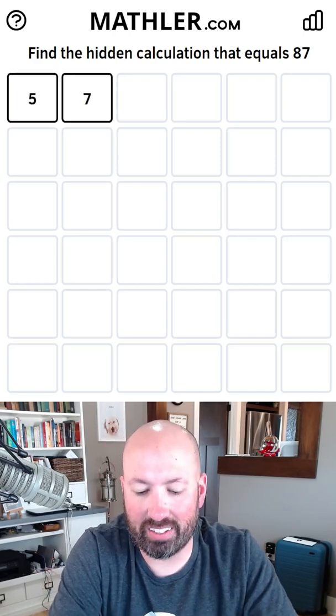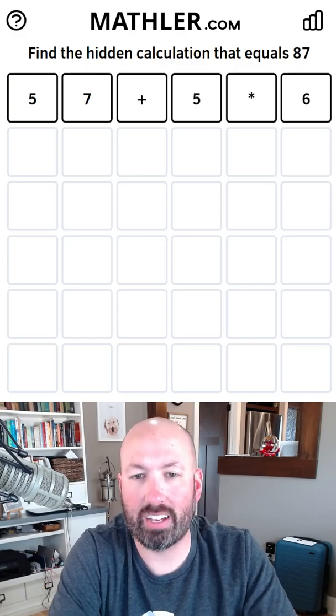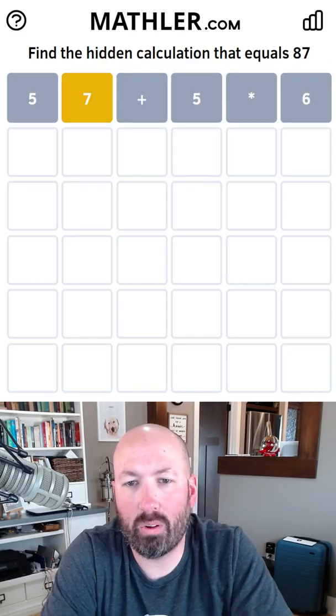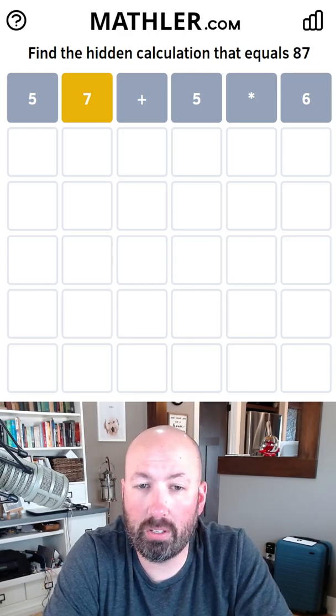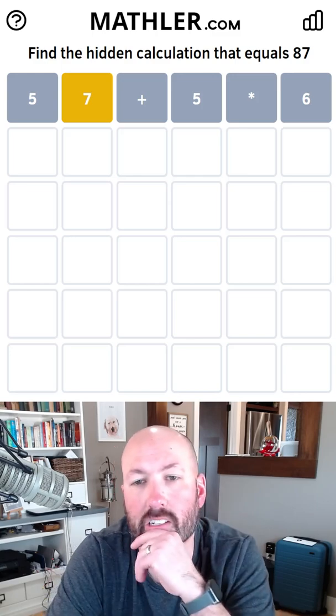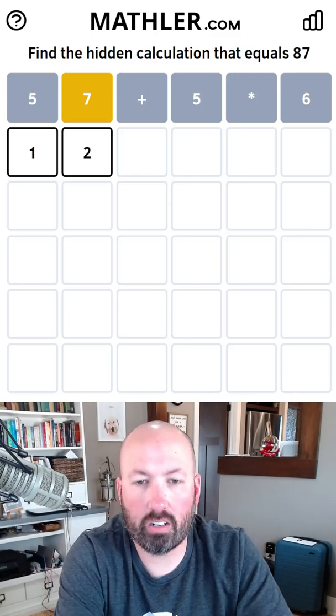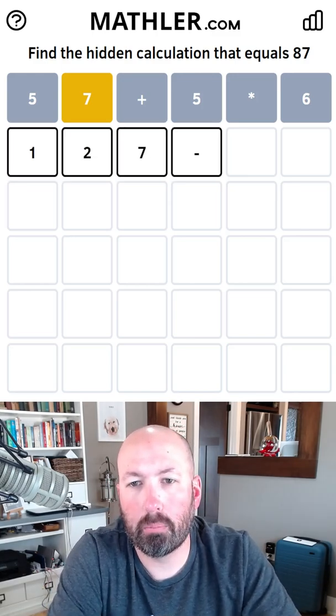I can do 57 plus five times six. We don't have much. We know there's no addition or multiplication. So this could be like a three-digit minus a two-digit. Something like 127 minus 40.